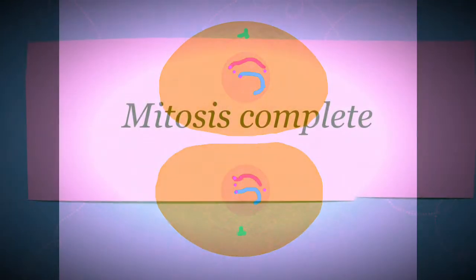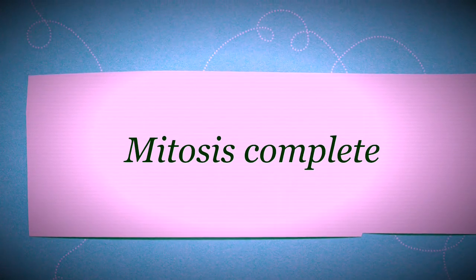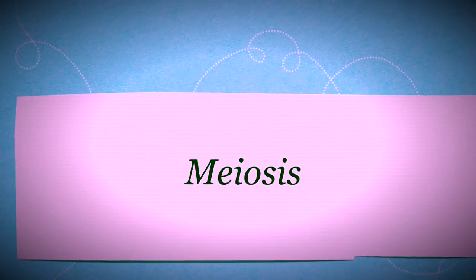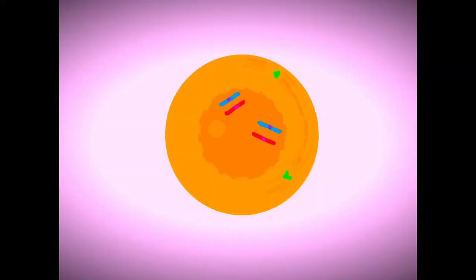The centrioles divide and move to opposite poles of the cell. The bivalents duplicate to form tetrads or four chromatic groups. The nuclear membrane disintegrates, crossing over recombination occurs.